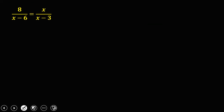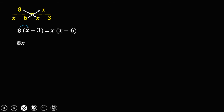Let's have another example using the same process — equating two rational expressions and cross multiplying. So 8 times x minus 3 equals the product of x times x minus 6. Applying the distributive property: 8 times x is 8x, 8 times negative 3 is negative 24, x times x is x squared, and x times negative 6 is negative 6x.